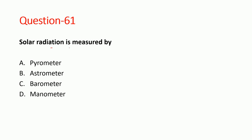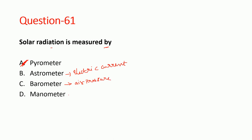Next question: solar radiation is measured by what instrument? Solar radiation is measured by a pyrometer. The ammeter measures electric current, the barometer measures air pressure or atmospheric pressure, and the manometer measures pressure difference. Here, solar radiation is measured by pyrometer. Option A is correct.